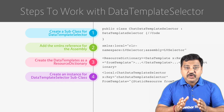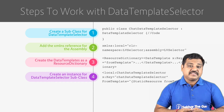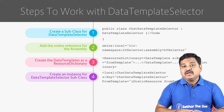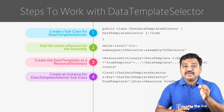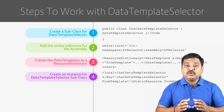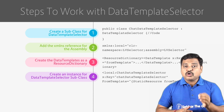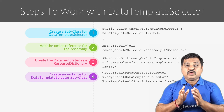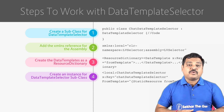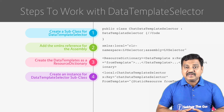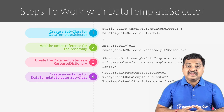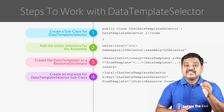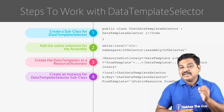Step 4: We need to create an instance for the data template selector subclass using the XML namespace alias. Since I have used the XML namespace alias as local, in order to create the instance we need to use local:ChatDataTemplateSelector, x:Key equal to name. Then we need to bind the properties of the data template selector with the data template defined within the content page. For example, from template equal to static resource from template, and so on.